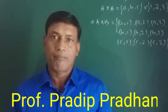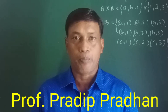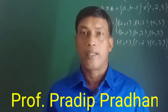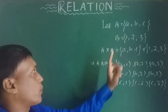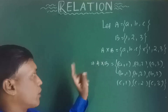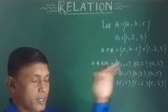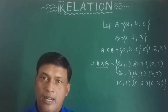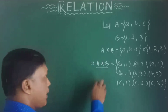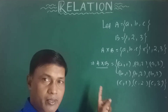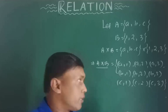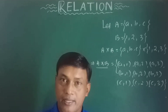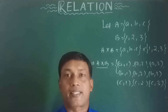Many times students are confused about what a relation is, but a relation is simply another form of a set — it is nothing but a set. Let A = {a, b, c} and B = {1, 2, 3}. Then A×B is the Cartesian product set: {(a,1),(a,2),(a,3),(b,1),(b,2),(b,3),(c,1),(c,2),(c,3)}. Every set has some subsets, so A×B, being a set, must also have some subsets.